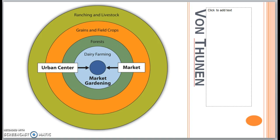In the model, the central marketplace is surrounded by agricultural activity zones. Those different rings represent different types of land use. Moving outward from the city, farming activities change from intensive to more extensive. Conversely, traveling from the outermost rings to the city center, you would pass through zones of extensive practices like grazing into more intensive farming practices like horticulture and dairying.